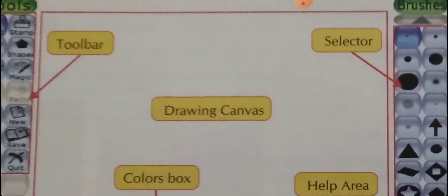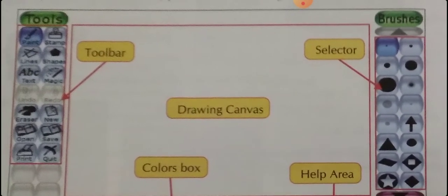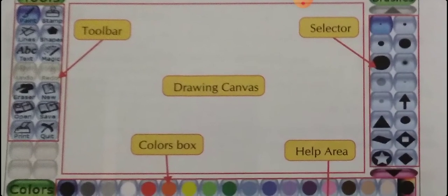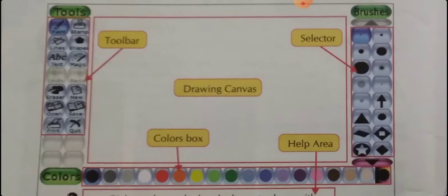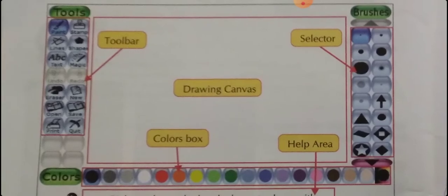The last component is Drawing Canvas. It is at the center of the screen and it is the largest part of the Tuxpaint window. So the five components are: Toolbar, Selector, Color Box, Help Area, and Drawing Canvas.